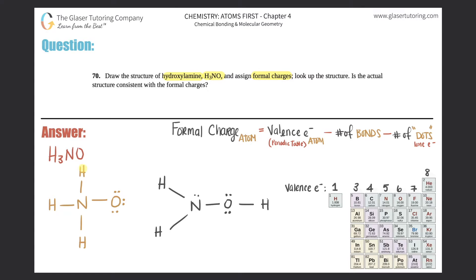Let's start with the hydrogens first. The hydrogens all look exactly the same — each hydrogen has only one bond attached to it. The formal charge for hydrogen: start with the valence electrons from the periodic table — hydrogen has one valence electron — minus the number of bonds (one), minus the number of dots around that atom (zero, since there are no lone pairs). So one minus one minus zero equals zero, which means all these hydrogens are neutral.